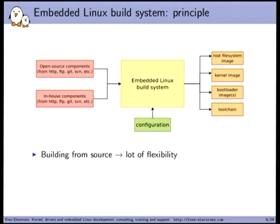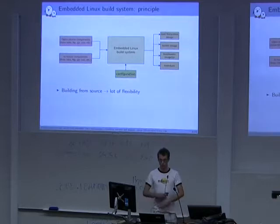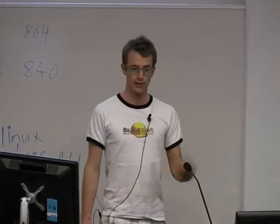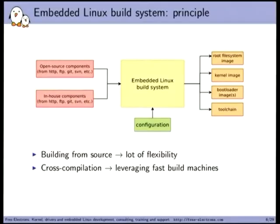There are many tools in this area — the principle of all of them is similar. They take source code from open source or in-house components, from Git trees or tarballs on the web, and produce a root filesystem image containing your applications, libraries, init scripts, and config files — plus possibly a kernel image, bootloader image, and cross-compilation toolchain. You feed the tool a configuration specifying the target architecture and which packages to include. Since everything is cross-compiled, you leverage the power of fast desktop machines, building a kernel for a Raspberry Pi in minutes instead of hours.